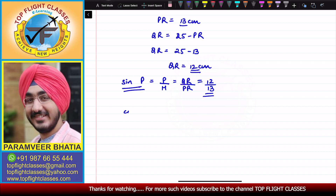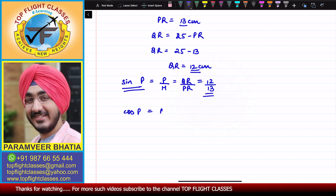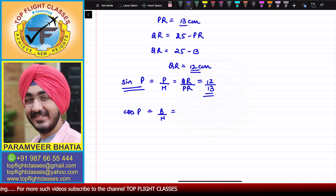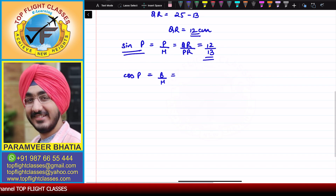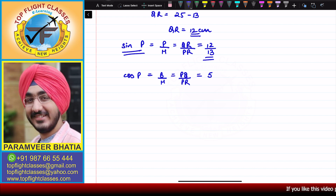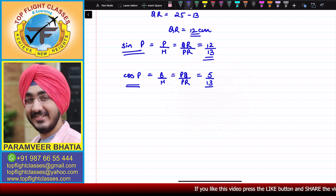For cos P, it is base over hypotenuse. The base is the side adjacent to angle P, which is PQ. So cos P equals PQ over PR. PQ is given as 5 cm and the hypotenuse PR is 13 cm, so cos P equals 5 over 13.